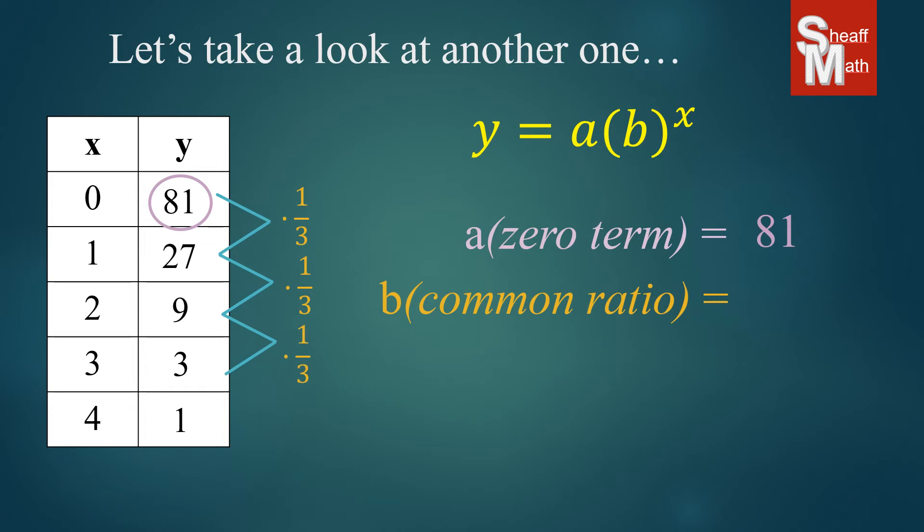You really want to pay attention that the ratio that you're using is the number that's actually multiplying each time. Saying that it divides by 3, which it is dividing by 3, but that is not how we write the ratio. It's the number that is being multiplied each time. So 1 third is our ratio. We put those into our generic function, and we have our equation.